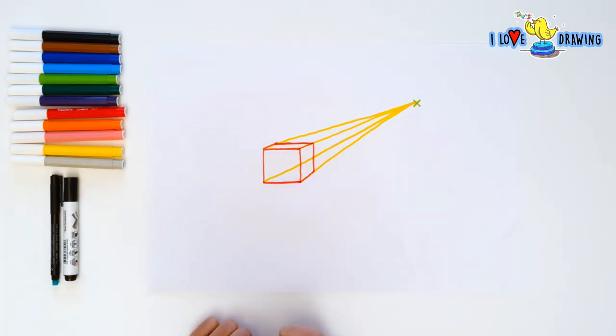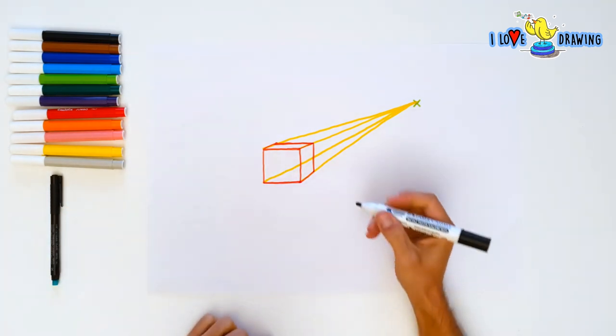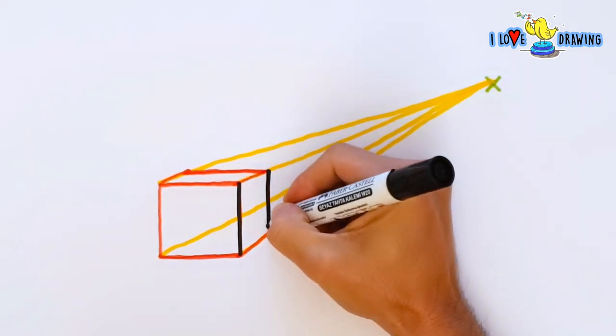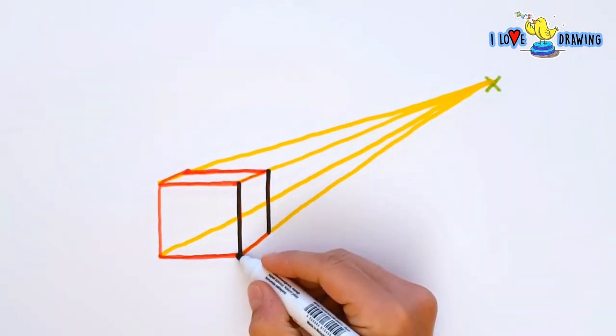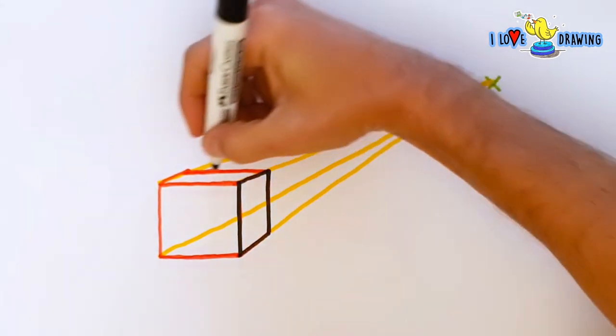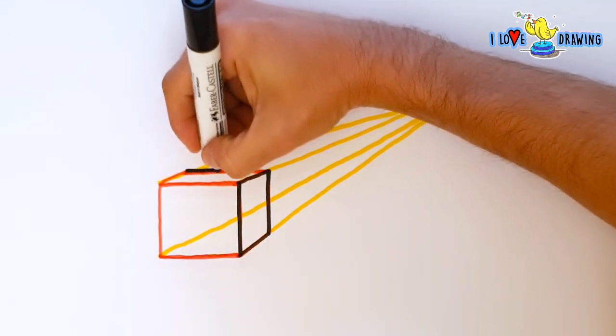Now it's time to grab my black marker because I want to define my cube even better, even stronger kids. I'm going to go over the red lines with a thick black marker. I think using different colors for each step made it a lot easier to understand. Do you agree?